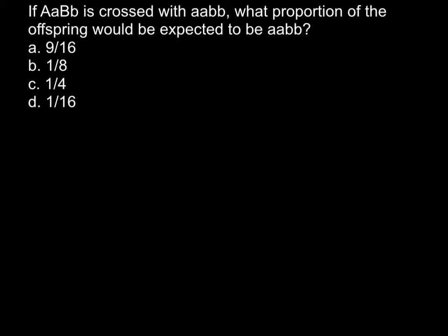Here is my explanation. We have two parents to cross. Parent 1 is heterozygous: capital A, small a, and capital B, small b. Parent 2 is homozygous recessive for both alleles: small a, small a and small b, small b. To solve this problem we can use two different methods, and I want to show both methods today.